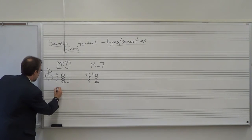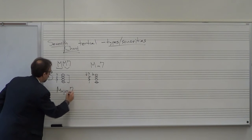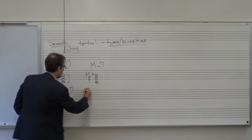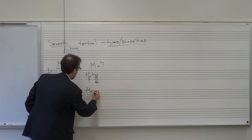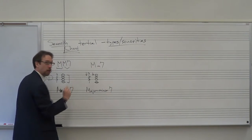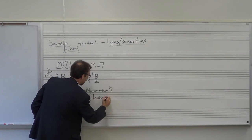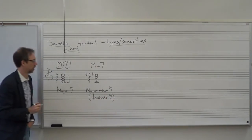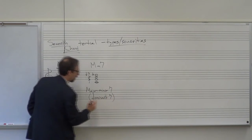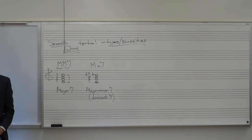This is called a major seventh chord, and this is called a major minor seventh chord. Another name for the major minor seventh is often called a dominant seventh chord. Major minor sevenths are also called dominant sevenths — we'll talk about why in another lecture.